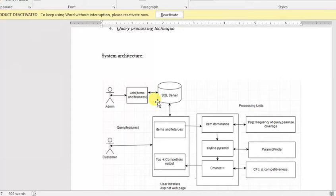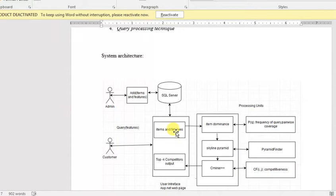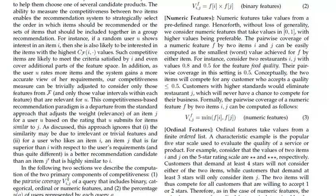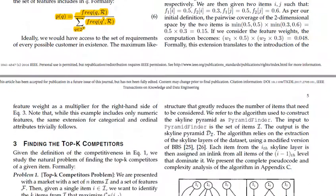The customer is the user who gives a query — a query consisting of an item and features given as an inquiry. That query goes to the item dominance module. Item dominance is a concept introduced in this paper. Consider a market with a set of items — item dominance determines how items relate to one another competitively.